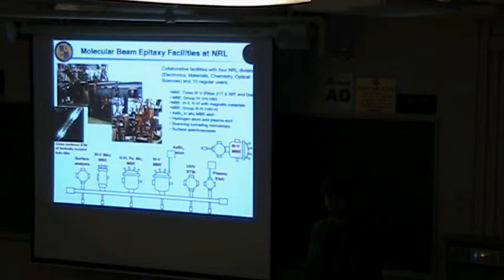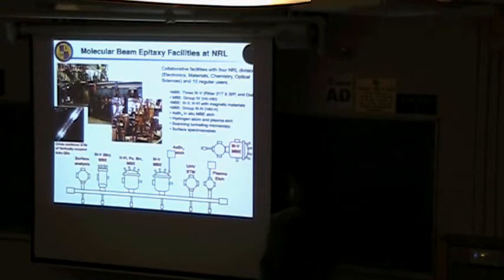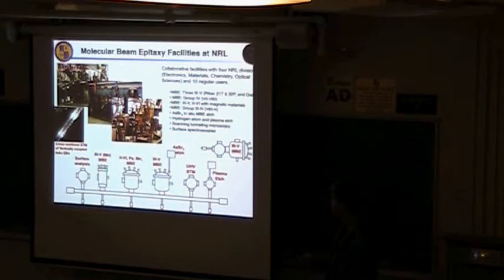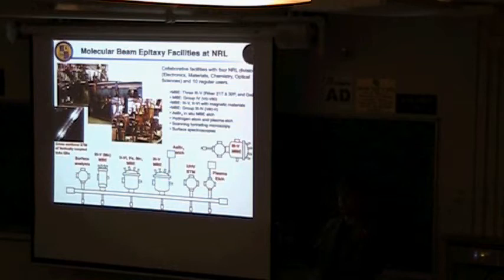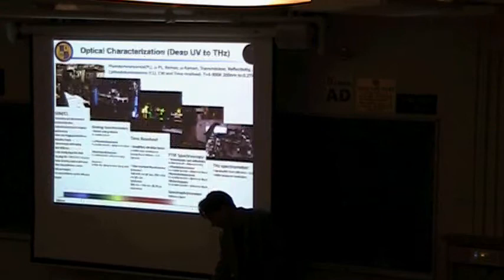There are lots of toys to play with. We have MBE machines — these big stainless steel systems used to grow semiconductor materials, one layer at a time. We have III-V capabilities, combining elements from columns three and five, like gallium arsenide or indium arsenide, plus group IV systems for silicon and germanium, and III-nitrides such as gallium nitride and aluminum nitride. We also have optical characterization systems spanning a wide spectral range.